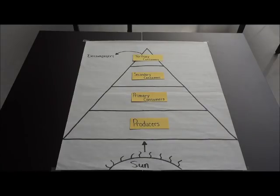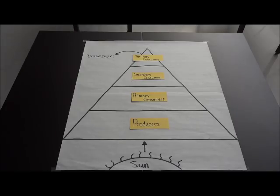We have now labeled all levels of the energy pyramid. Our bottom level is producers, second level is primary consumers, third level is secondary consumers, and the fourth level at the very top is tertiary consumers. From the tertiary consumers there is an arrow pointing towards the decomposers, meaning the energy from the tertiary consumers will go towards the decomposers because the decomposers will decompose or break down the tertiary consumers.